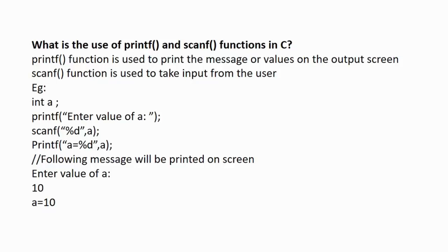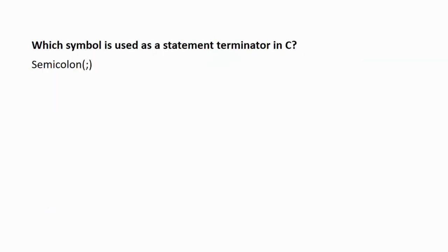Here, %d is a formatting output that tells the compiler that in place of %d, the value of a will be inserted. We can see that the user gets the message 'enter the value of a'. Suppose the user enters 10 as a value, then 'a equals to 10' will be printed.